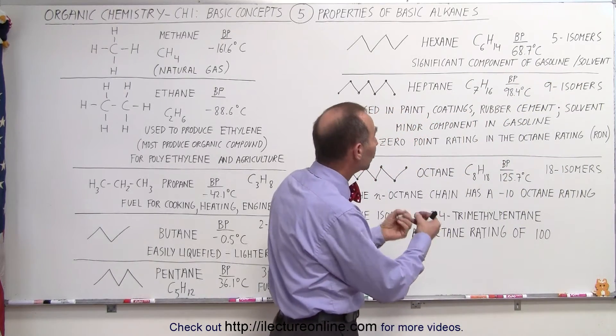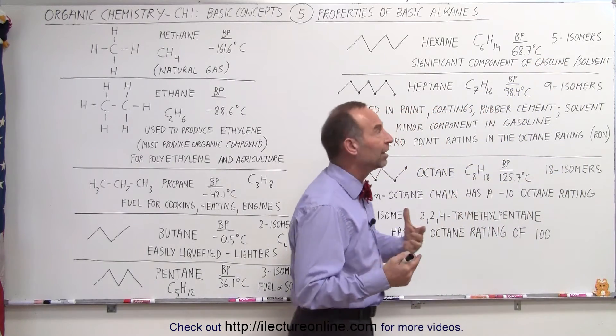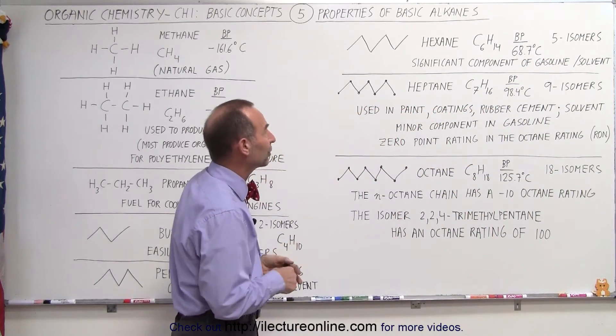Again since it now has six carbons there's a possibility of a total of five isomers, five different structures that contain six carbons and 14 hydrogens.